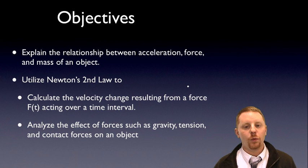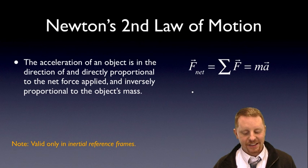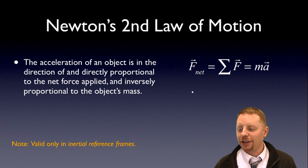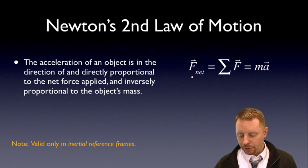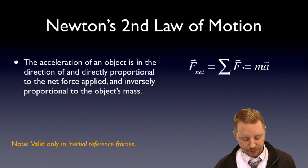So let's dive right in. What is Newton's second law? It says the acceleration of an object is in the direction of and directly proportional to the net force applied, and inversely proportional to the object's mass. Or in formula terms, the net force on an object, a vector, is equal to the sum of all forces on the object, and it equals the mass times the acceleration, which will be in the same direction as the net force.